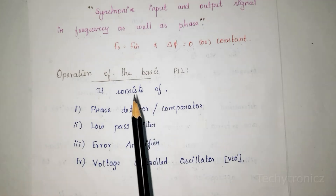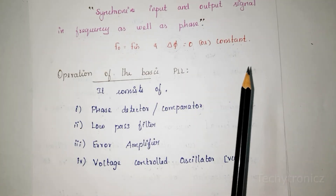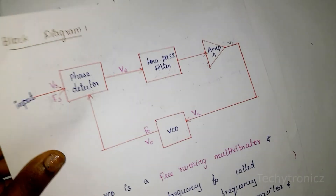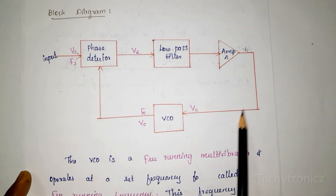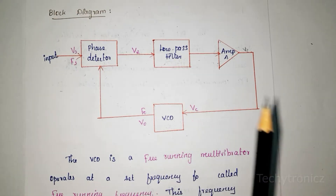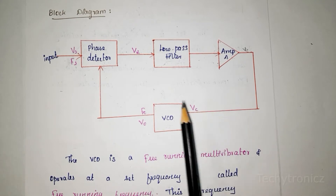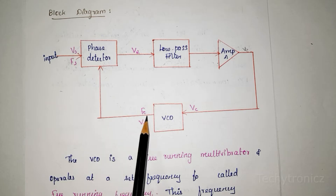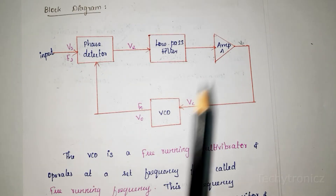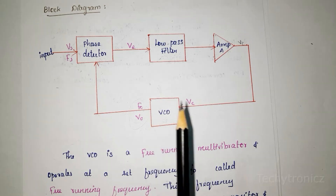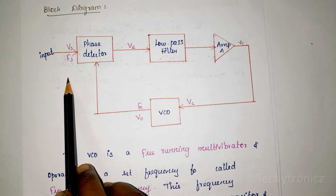PLL is a feedback system. It includes a phase detector, low pass filter, error amplifier, and voltage controlled oscillator. Looking at the block diagram, this feedback system's purpose is to force the VCO to replicate and track the frequency and phase at the input when in lock. PLL is a control system that allows one oscillator to track another.